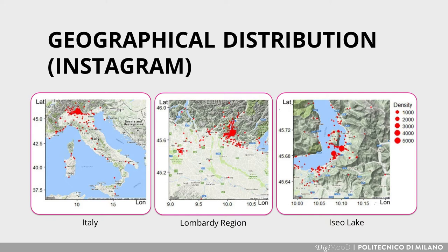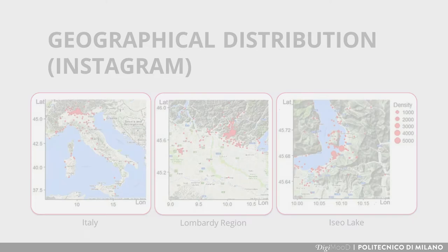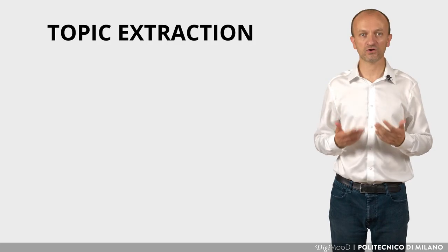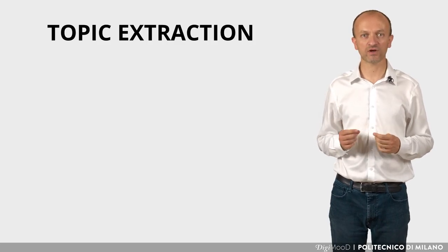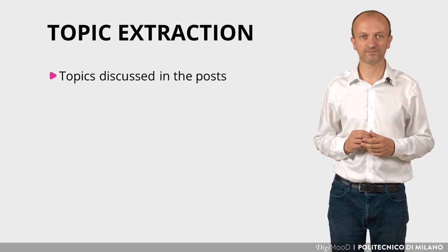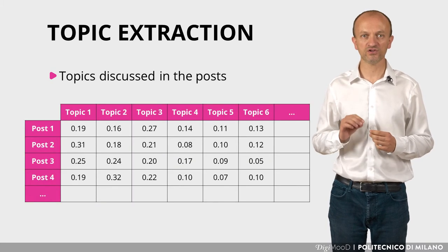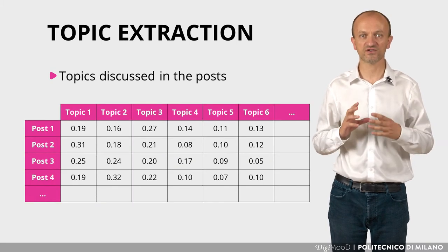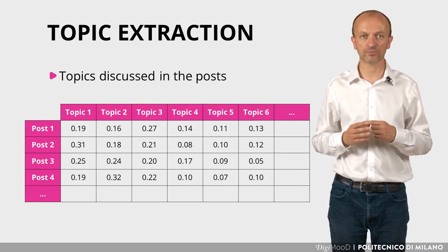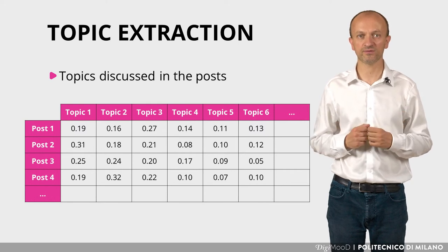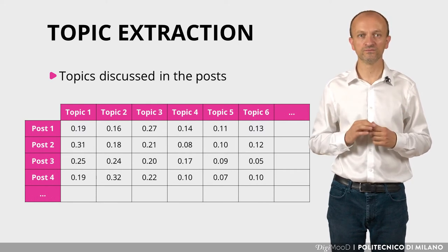We can see relevant trends here, including the fact that not all the posts about the event are actually placed in the event location. In terms of content analysis, we can run topic extraction from posts. In this way, each of them is assigned to a set of topics, with a probability of belonging to each topic. This is useful for categorizing the posts.